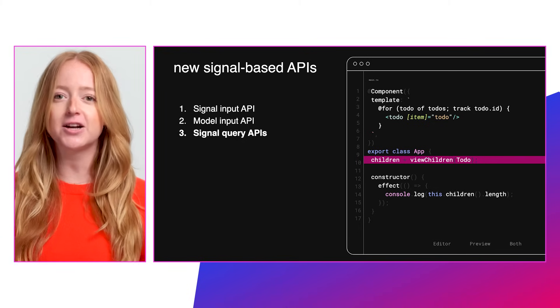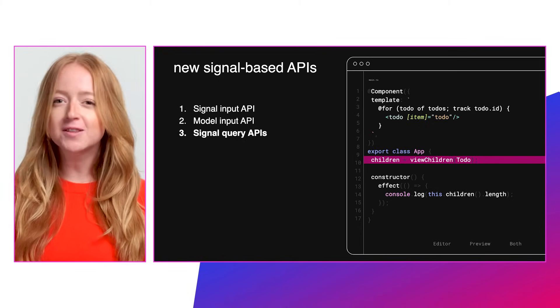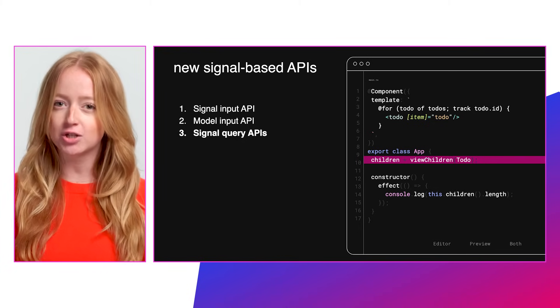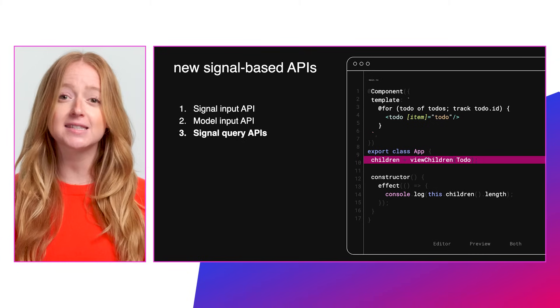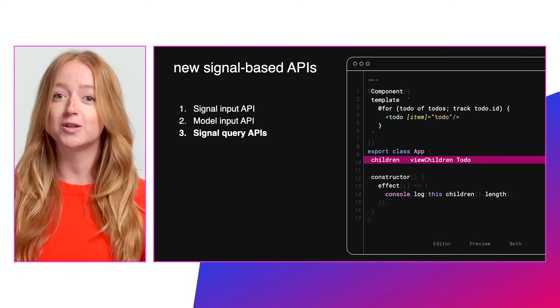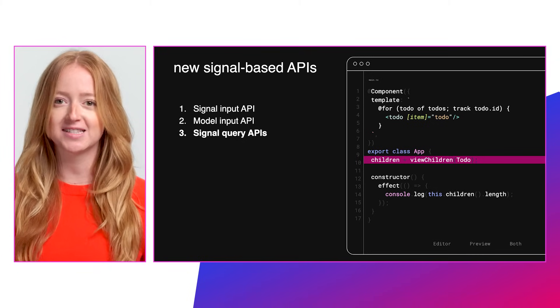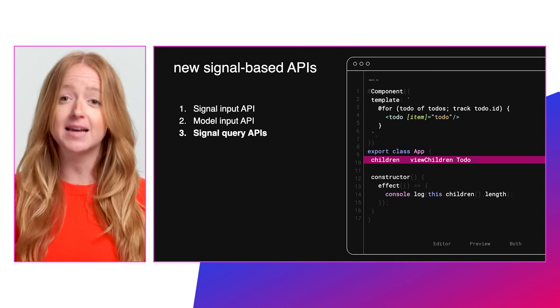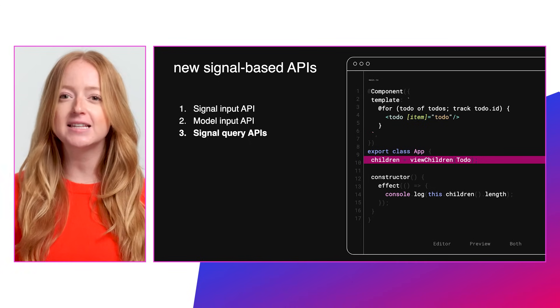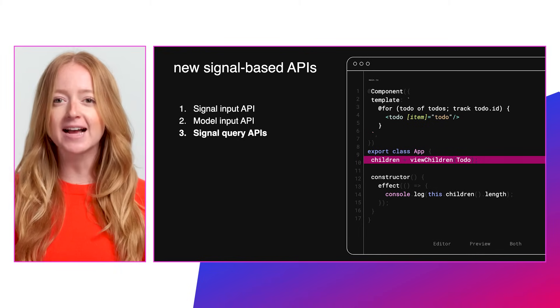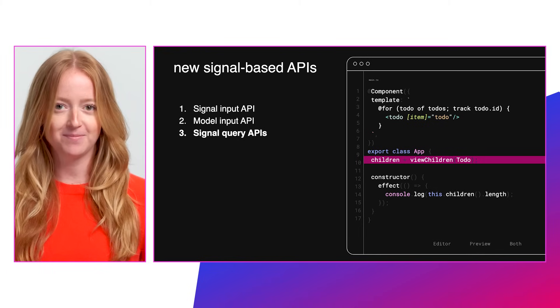The underlying query mechanism doesn't change much. Conceptually, Angular still creates singular child or plural children queries that target elements in a template or content. The difference is in the type of result and the exact timing of the result availability. These features bring V18 closer to our goal of signal-based components.